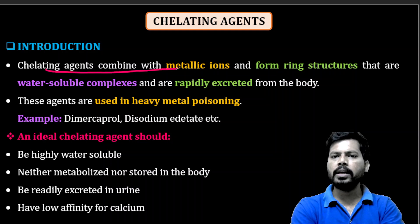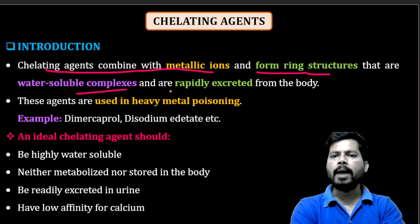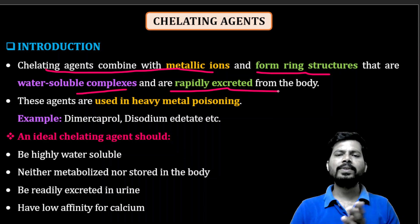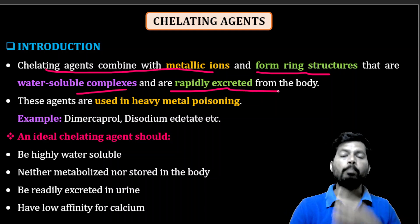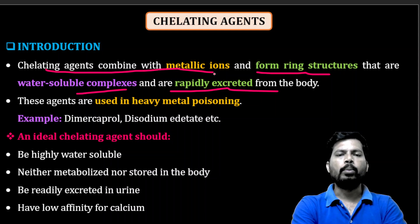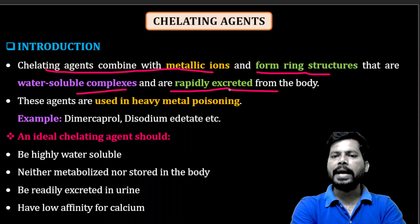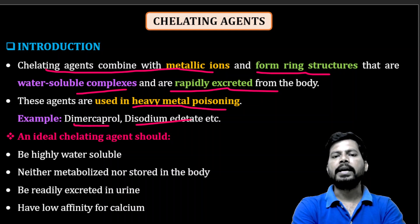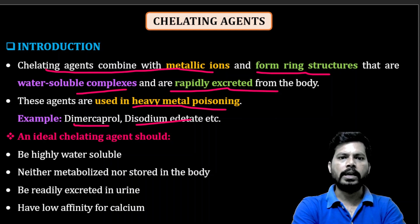Chelating agents combine with metallic ions to form ring structures that are water-soluble complexes, rapidly extracted from the body mostly through the urine. They are used in heavy metal poisoning. Examples include dimercaprol, disodium edetate, and calcium disodium edetate.